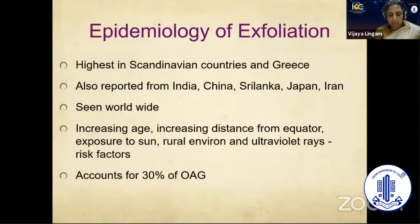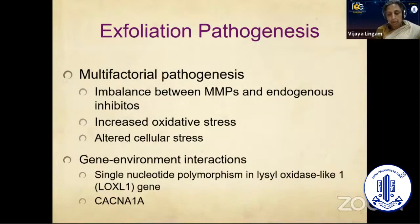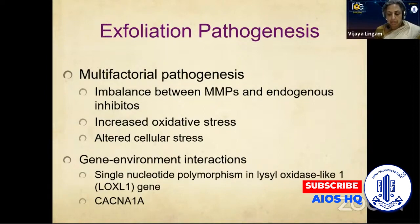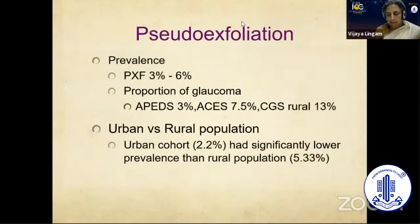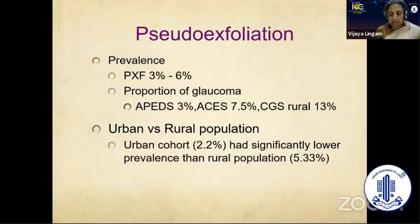It accounts for 30% of Copenhagen glaucoma. Coming to the pathogenesis, it is again multifactorial. An imbalance between matrix metalloproteases and their endogenous inhibitors, increased oxidative stress, and altered cellular stress response have been proposed as pathogenic mechanisms. A gene-environment interaction has also been postulated. The LOXL1 gene is associated with exfoliation and plays a potential role in its pathogenesis. Genome-wide association studies have revealed non-LOXL1 gene loci significantly associated with increased risk of exfoliation, such as CACNA1A.